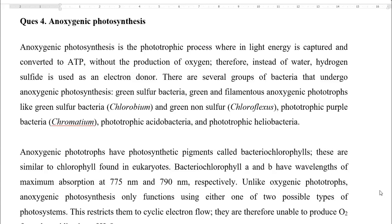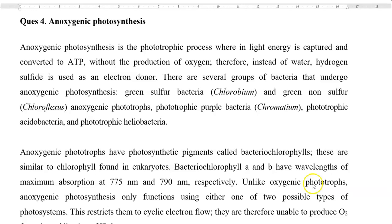Several groups of bacteria carry out anoxygenic photosynthesis. These include green sulfur bacteria — for example, Chlorobium — and green non-sulfur (filamentous) bacteria — for example, Chloroflexus. These are typical anoxygenic phototrophs. Then come the phototrophic purple bacteria — for example, Chromatium — along with phototrophic acidobacteria, that is Chloracidobacterium, and phototrophic heliobacteria.